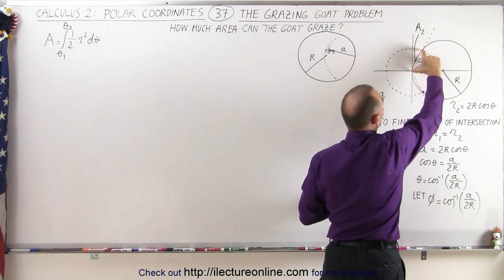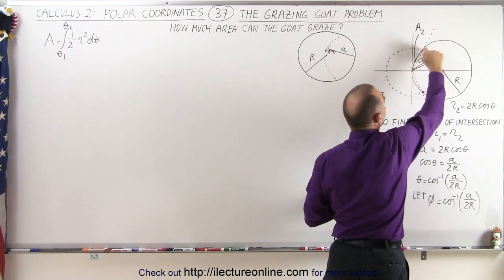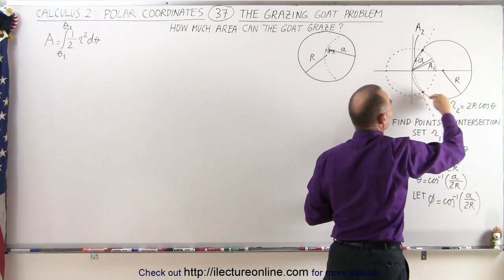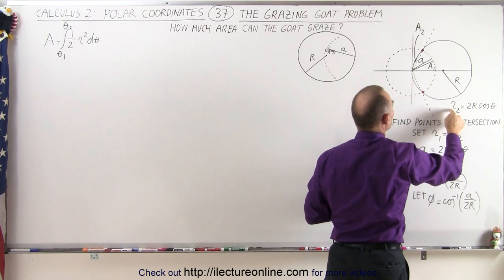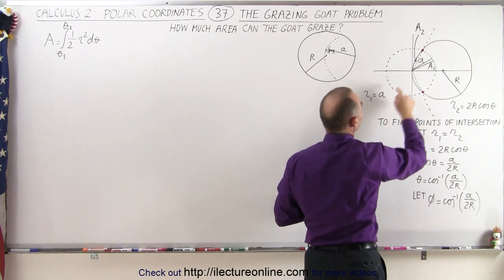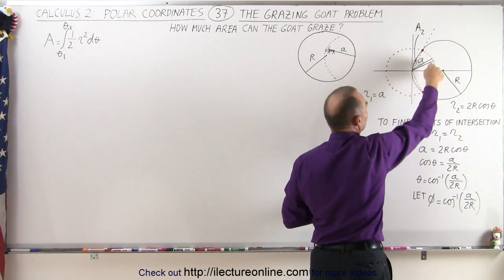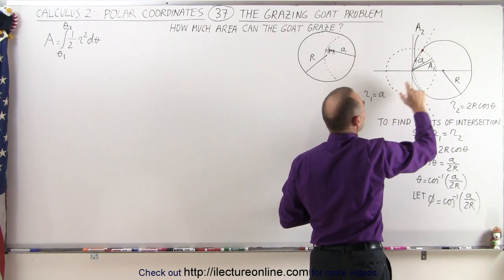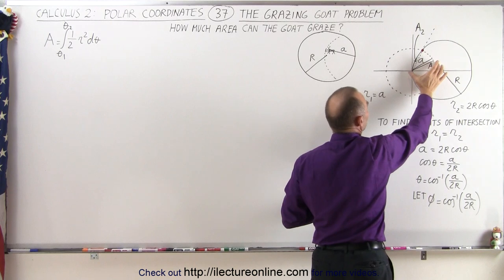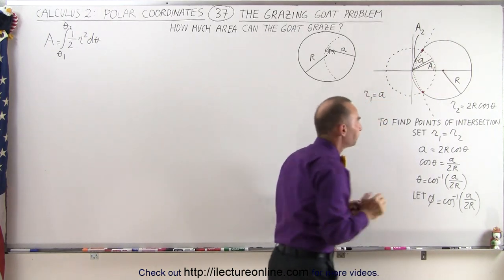A2 is hemmed in only by the curve over here — let's call that curve R2. And for the rest of the area, for A1, it's only limited by the curve R1.